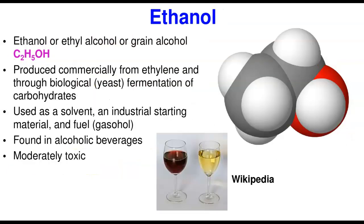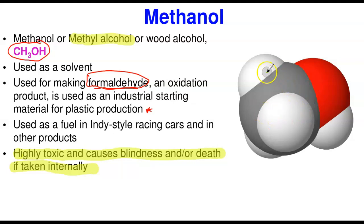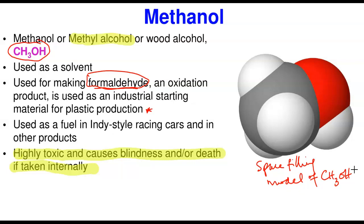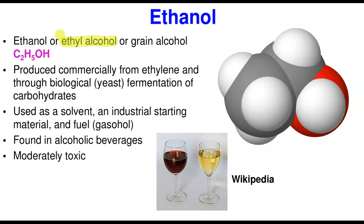Ethanol, or ethyl alcohol, has the formula C₂H₅OH — it has an ethyl group attached to the alcohol, hence the name. Here I'm showing the space-filling model of ethanol. Ethanol is produced commercially from ethylene: hydration of ethylene gas gives you ethanol. It is also produced by fermentation of carbohydrates, as in the commercial production of beer and wine.